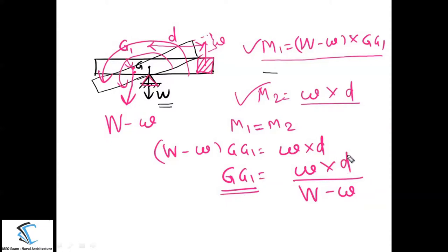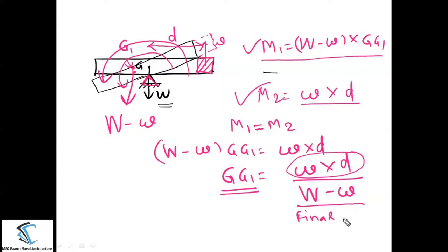In this formula, the numerator (w × d) is the moment generated due to the removal of the mass, and the denominator (W − w) is the final mass after removal. In general, GG1 equals the moment generated due to removal of the mass divided by the final mass. This case covered the removal of mass; now let us consider the second case.